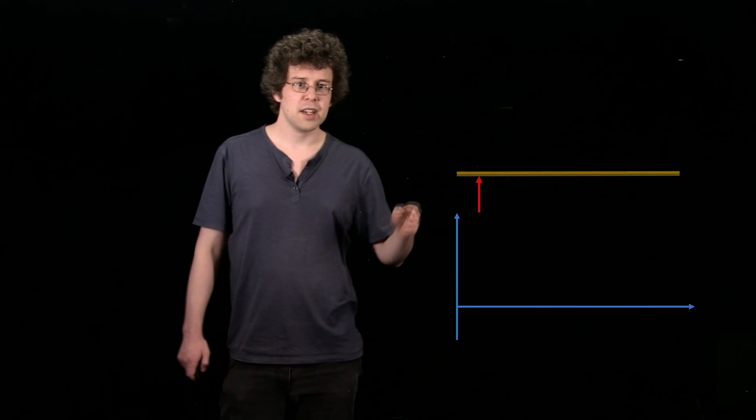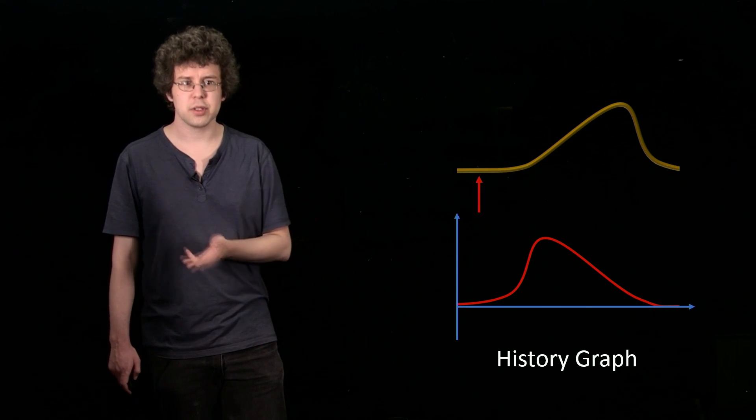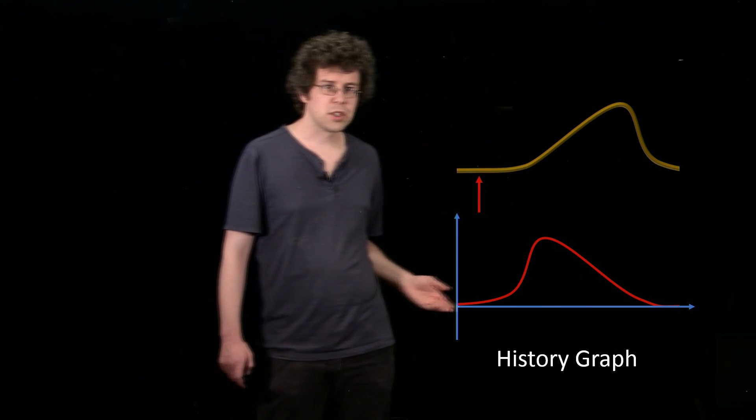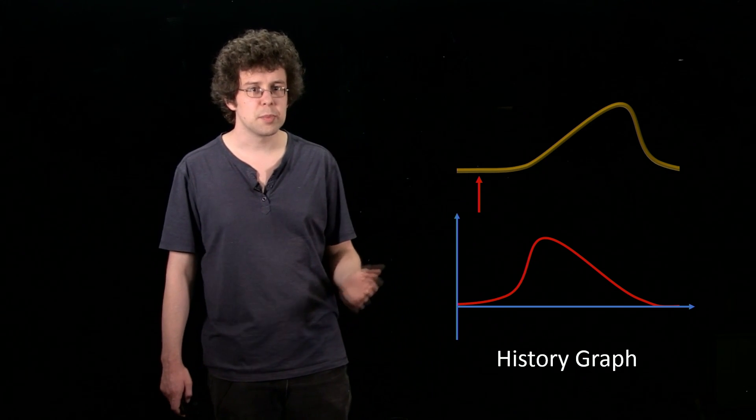I'm going to give it a flick and as the wave propagates along, we'll graph the displacement at this point. As our wave moves along, the displacement goes up and then comes back down. The first thing to note is we call this a history graph because the horizontal axis is time, so the graph shows us the history of our wave as it passes this point.